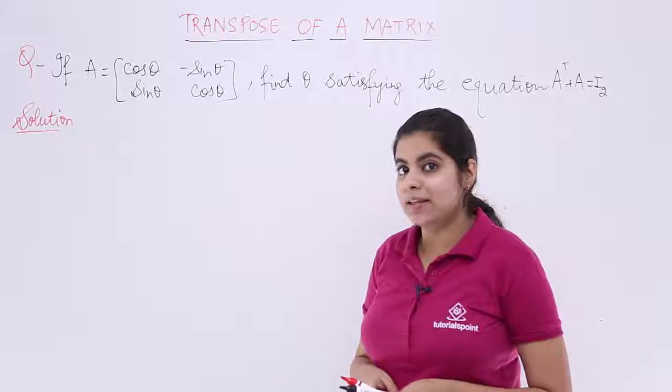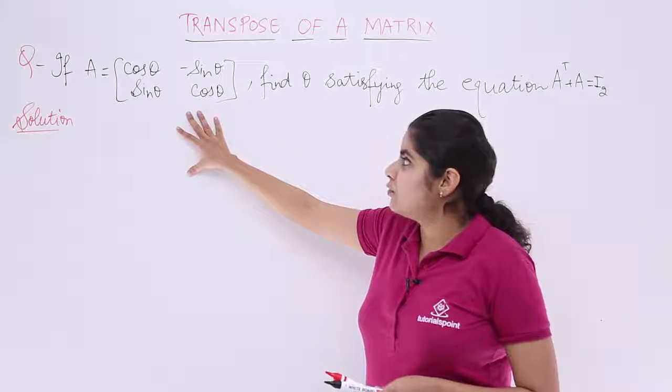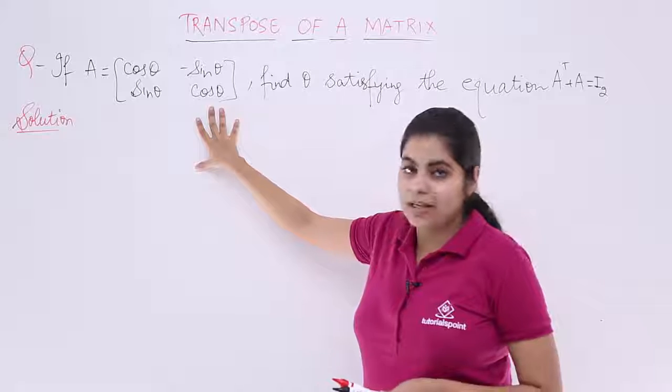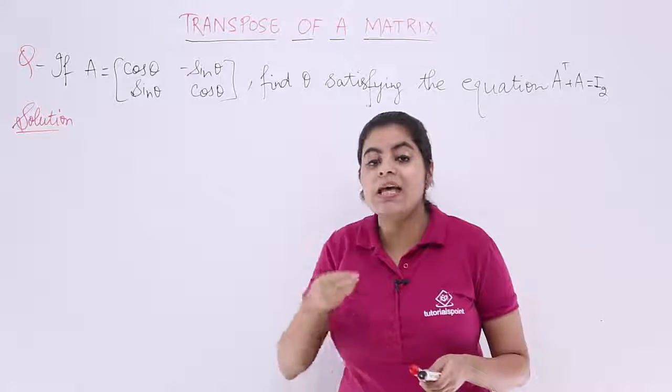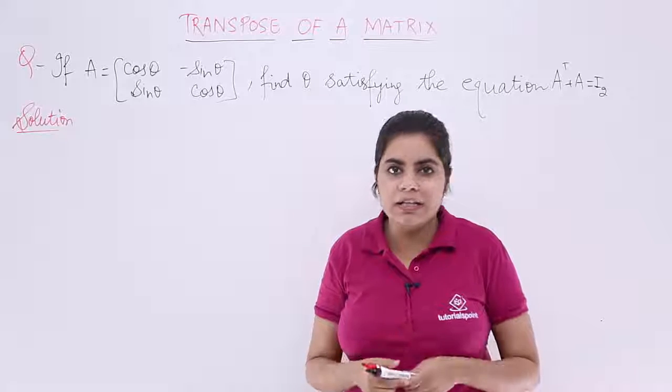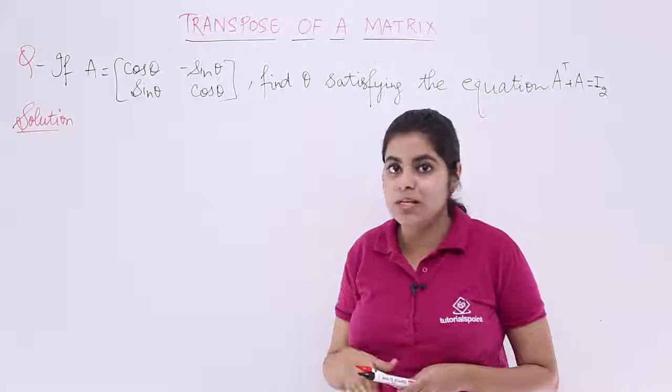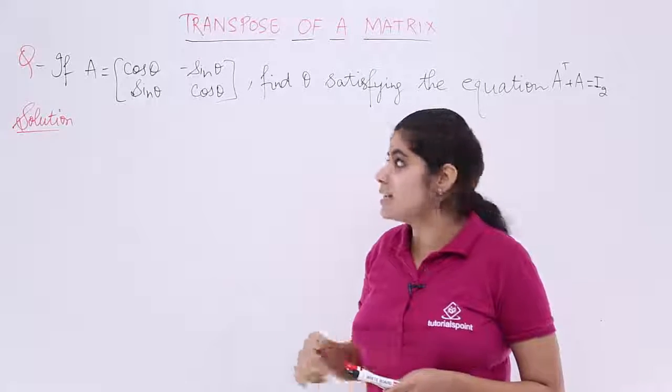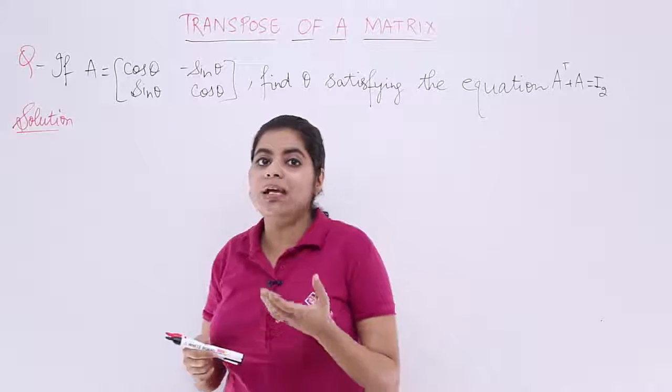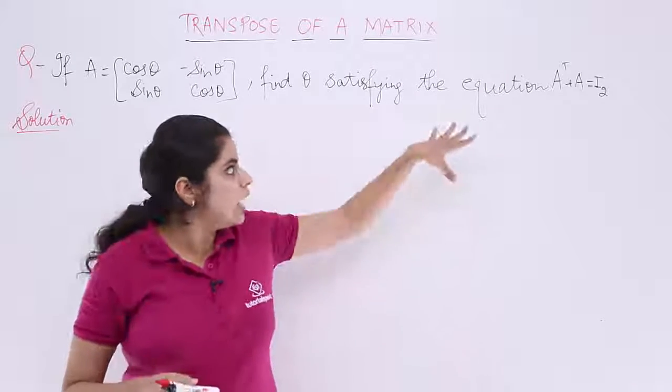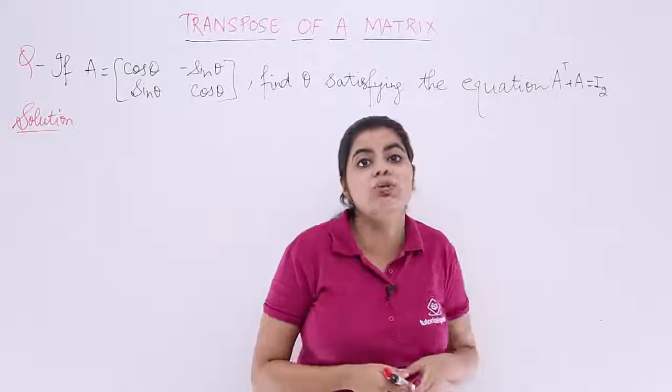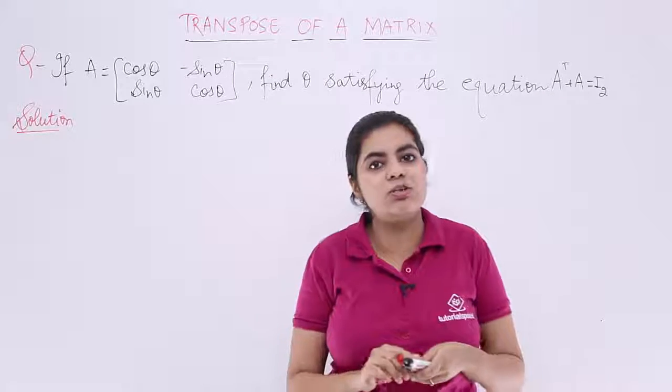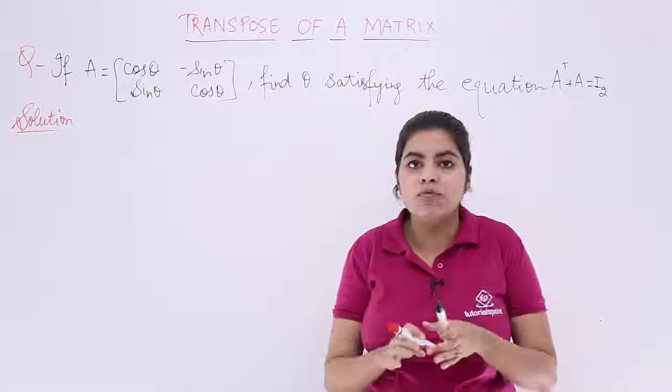Let's read the question together. If A is equal to cos theta minus sin theta, sin theta cos theta, a matrix with trigonometric functions, then what does the question ask? Find theta such that it satisfies the equation A transpose plus A equals I₂. What is I₂? I₂ is the identity matrix of order 2.